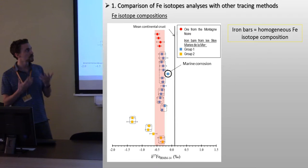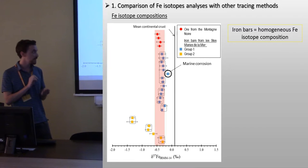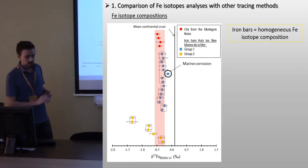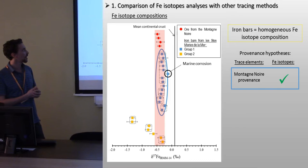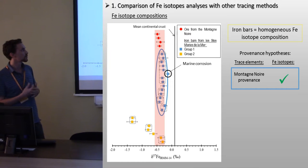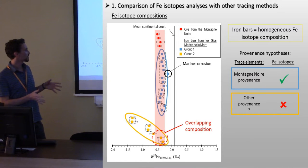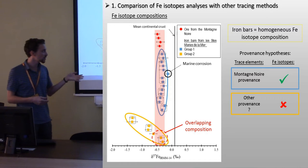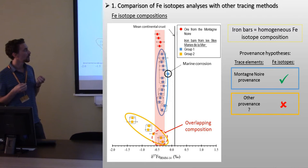First, we can see that each bar has a homogeneous iron isotopic composition, except maybe for corroded iron, which shows the need to perform our analysis on non-corroded metal. In terms of provenance hypothesis, the bars from the first group have compositions similar to those of materials from the Montagne-Noire, which tends to validate the provenance assumption. However, for the second group, some bars have clearly distinct compositions, but others have compositions which overlap with that of materials from the Montagne-Noire, so in this case we can't validate the assumption of another provenance.